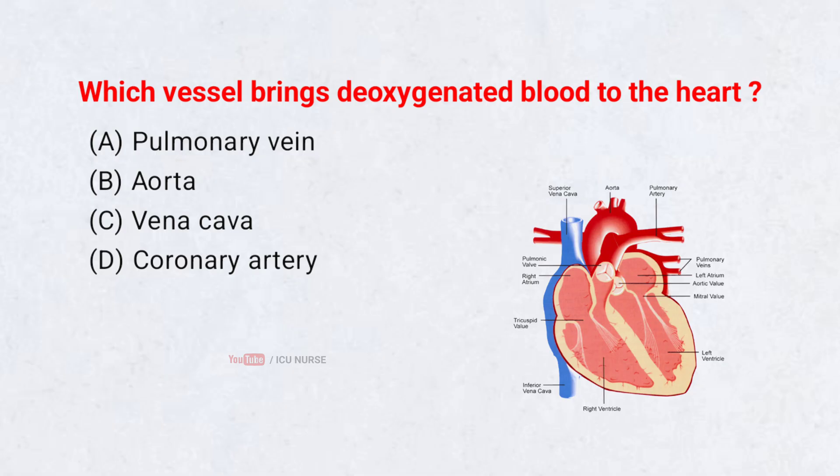Which vessel brings deoxygenated blood to the heart? Correct answer C: Vena cava.